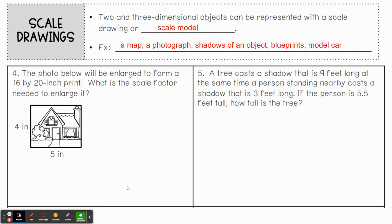Let's go ahead and move on. Two and three dimensional objects can be represented with a scale drawing or scale model. For example, a map is a scale model. Anytime you look at a paper map or even a globe, it's scaled down from the actual item.